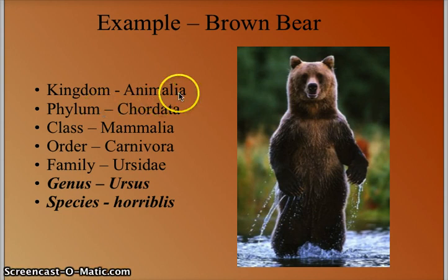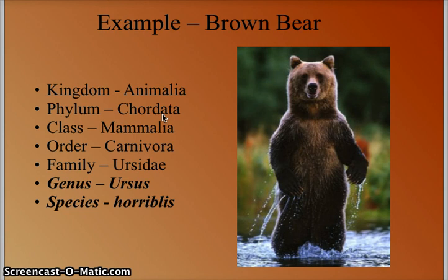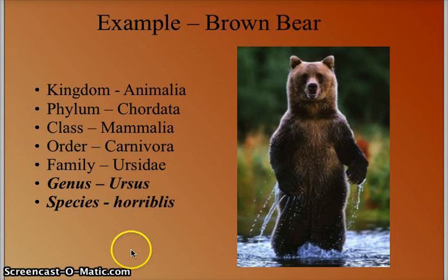We'll begin with the brown bear. A brown bear is an animal — animal kingdom. It has a spinal cord, so Chordata for its phylum. It has fur and nurses its young, so Mammalia for its class. Order Carnivora, because it is a meat-eating organism. The bear family is Ursidae. Its genus is Ursus and its species is horribilis.